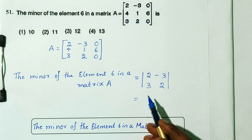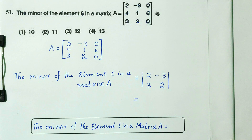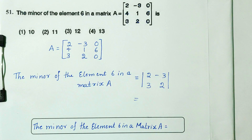Now we apply the determinant. The determinant is defined as the product of the principal diagonal elements minus the product of the remaining elements. That is called the determinant.